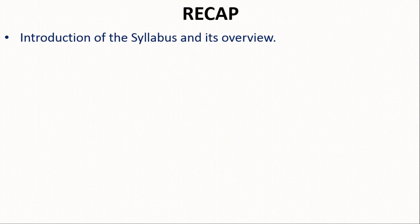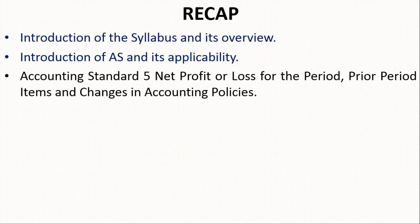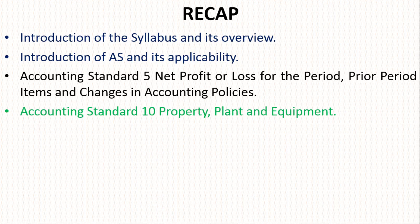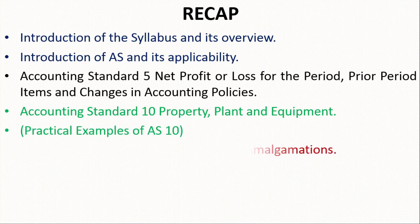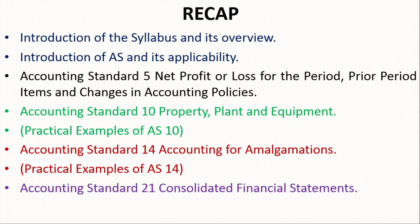First, I would like to recall the previous videos and lectures. We have already seen the introduction of the syllabus and its overview. After that, we discussed the introduction of accounting standards and their applicability. We studied Accounting Standard 5 — net profit or loss for the period, prior period items, and changes in accounting policies. Then we covered Accounting Standard 10, that is property, plant and equipment, and Accounting Standard 14, that is accounting for amalgamations, including how to calculate the purchase consideration. Finally, we discussed Accounting Standard 21, that is consolidated financial statements.